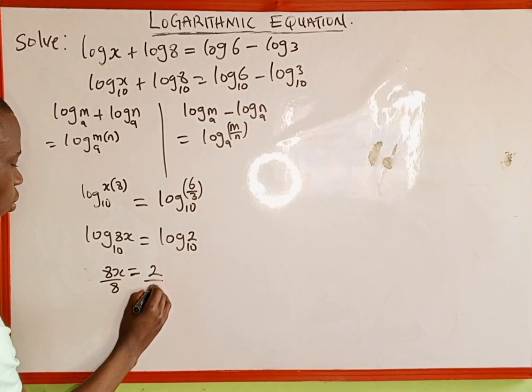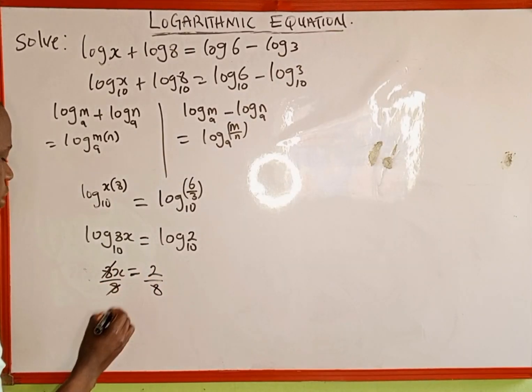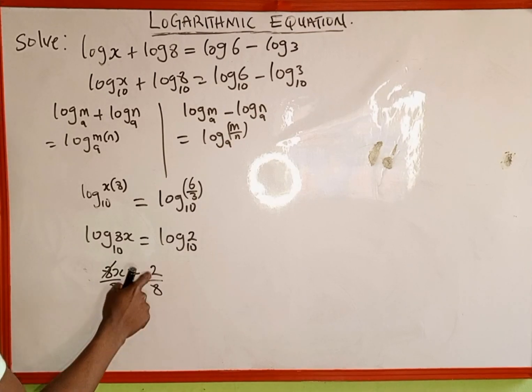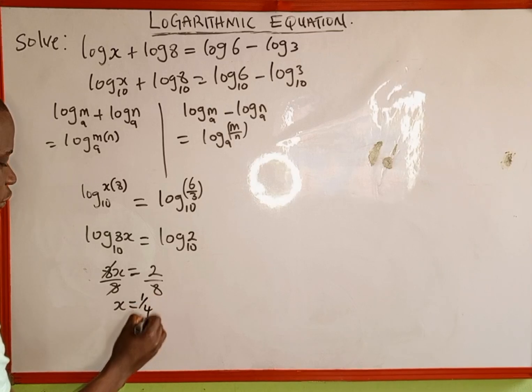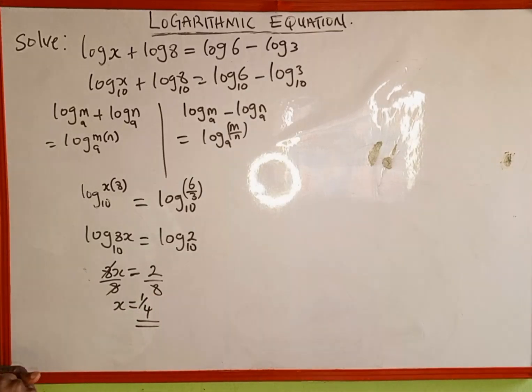Then we divide both sides by 8. This is going to cancel. x now will be equal to 2 divided by 8, which is 1/4. So therefore, x is equal to 1 over 4.